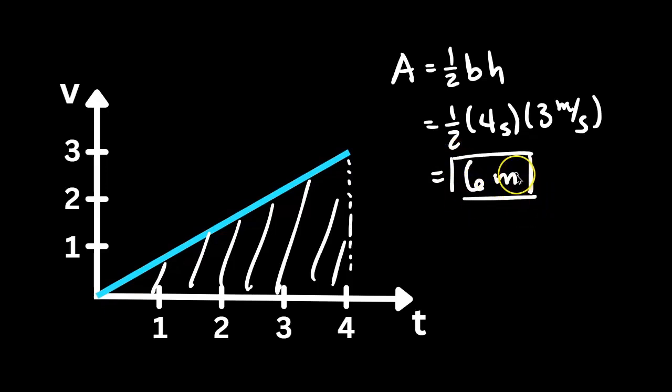What does this mean? This is telling us that this object, which is moving at an increasing velocity over 4 seconds, travels 6 meters.